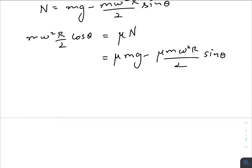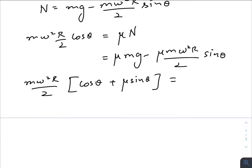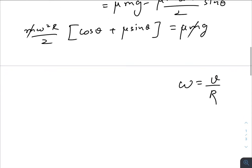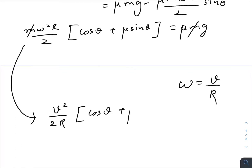Rearranging gives mω²(r/2)(cosθ + μsinθ) = μmg. The mass m cancels out. Since there is only pure rolling and no slipping, ω = v/r. Substituting, we get v²/(2r) · (cosθ + μsinθ) = μg.